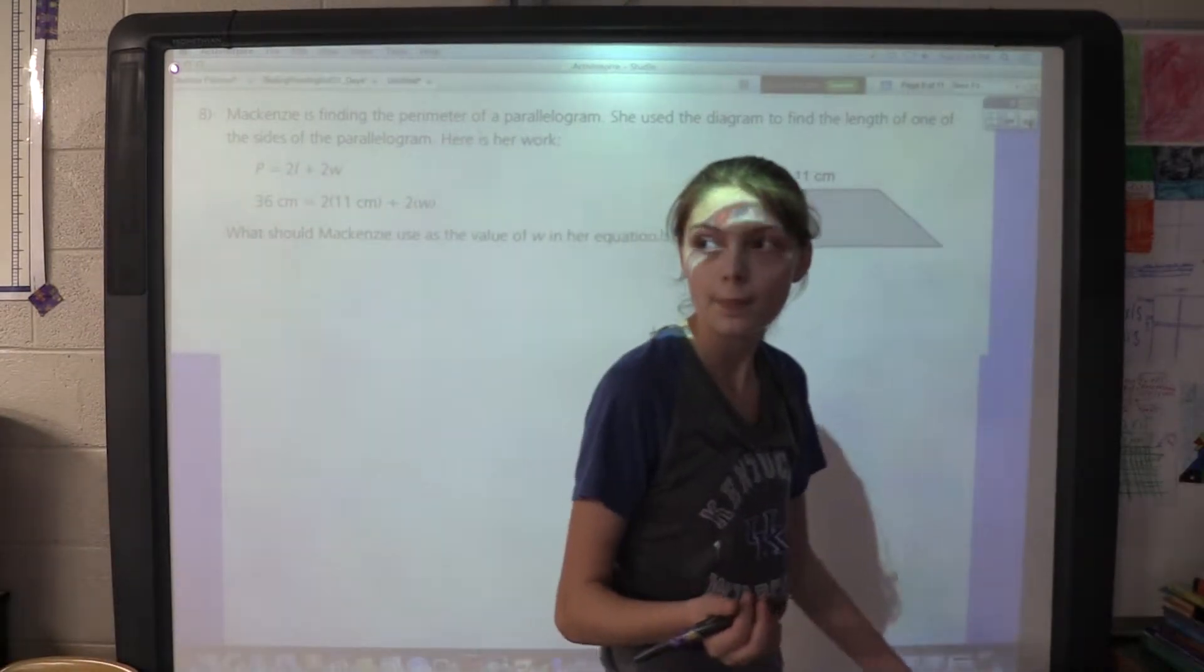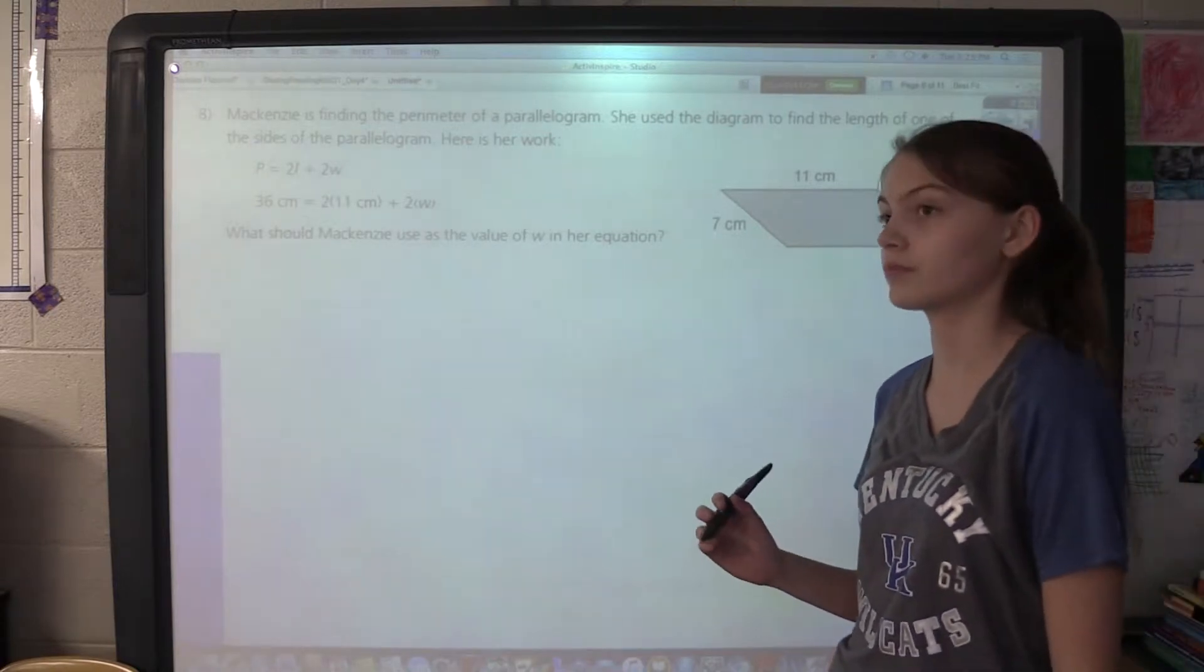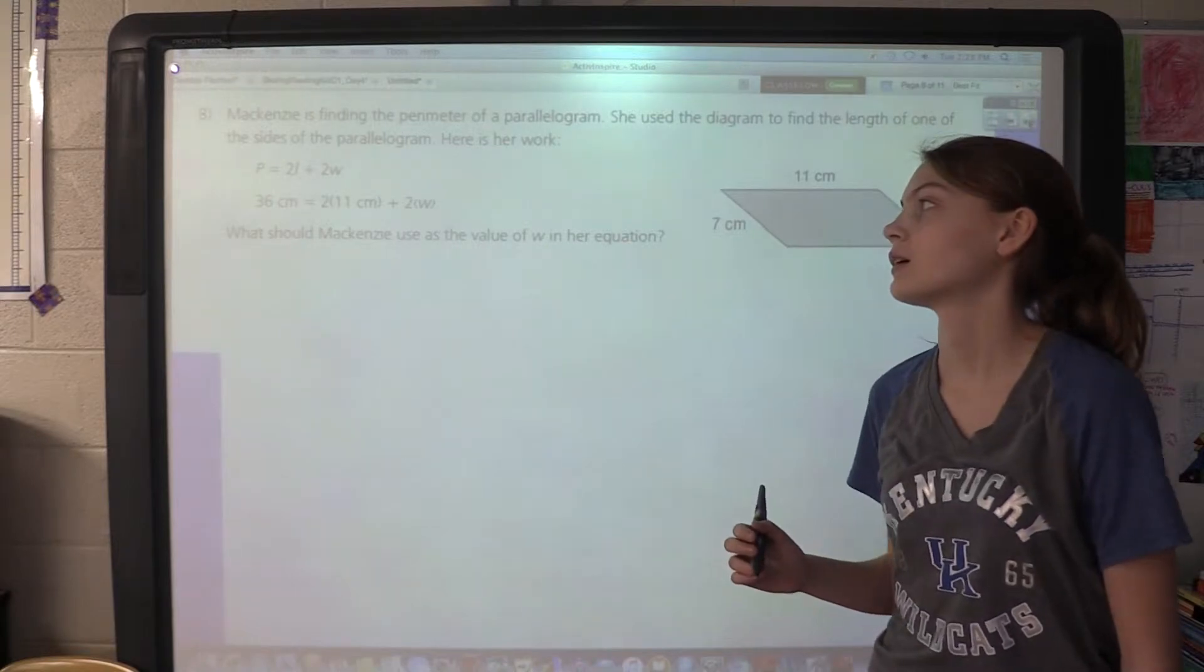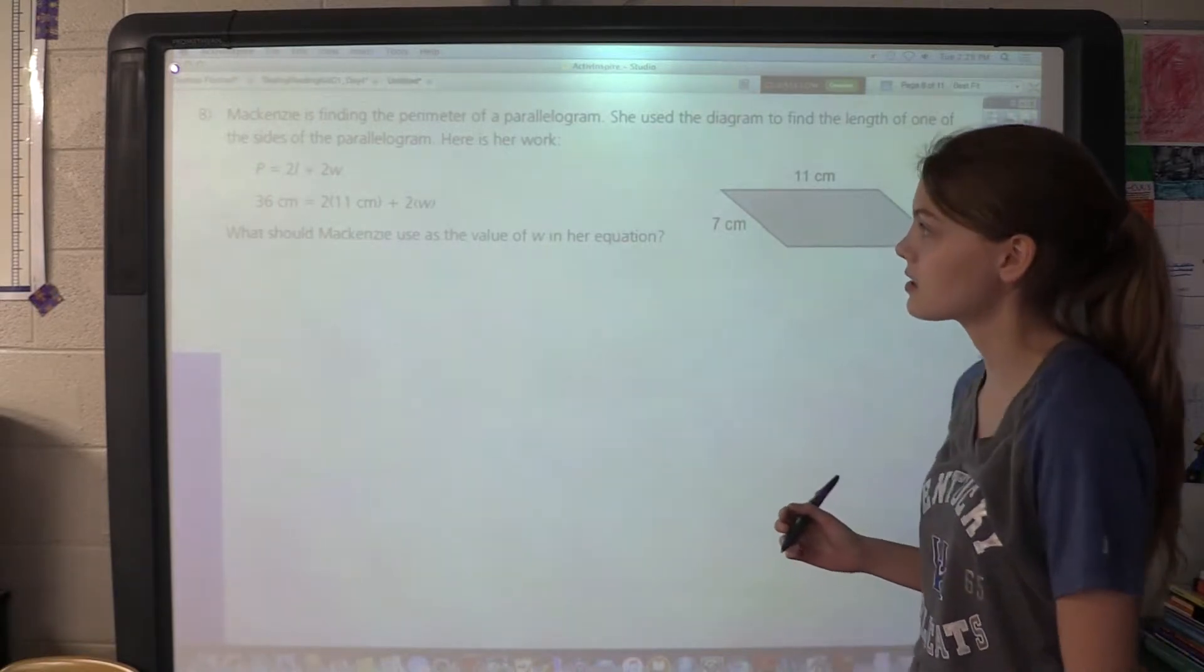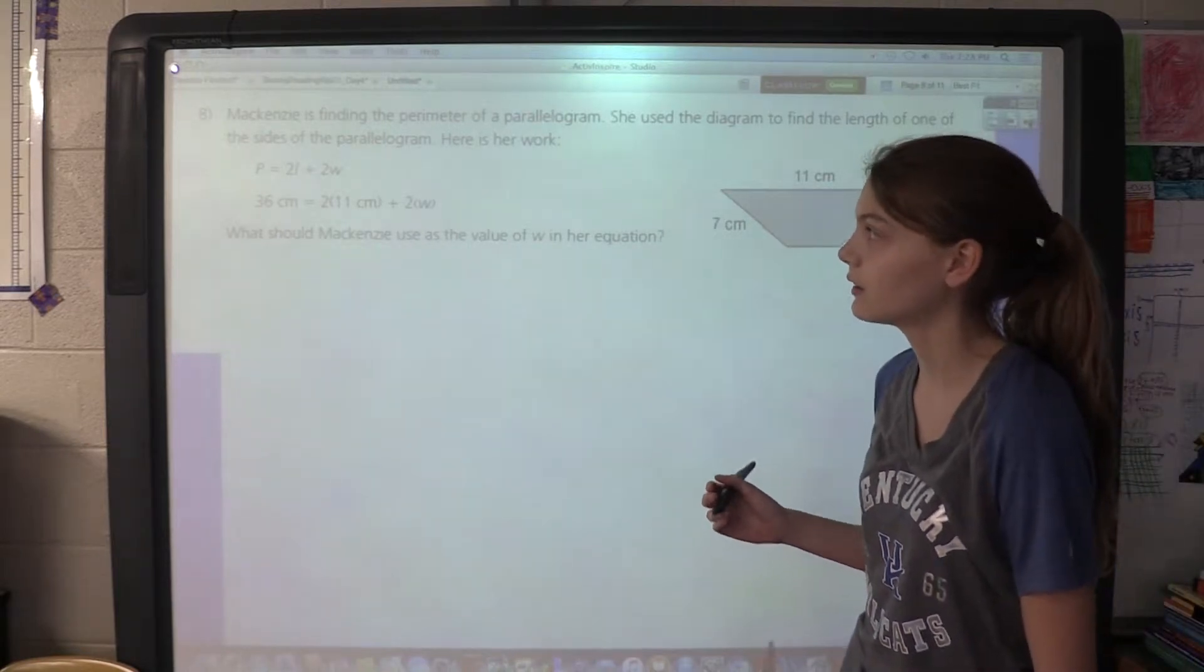Can I stop you before you go any farther? When you have that formula, you said P equals 21. Now that's not a 2 and a 1, that's a 2 and an L. So that's 2 times length plus 2 times width, okay? I just wanted to make sure you understood that. Keep going.